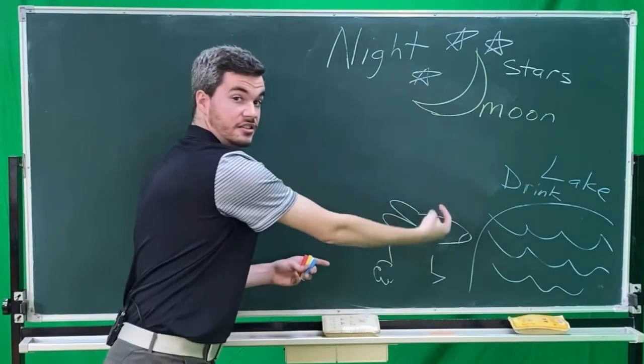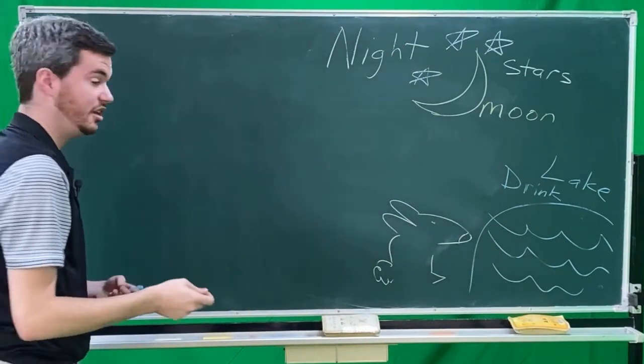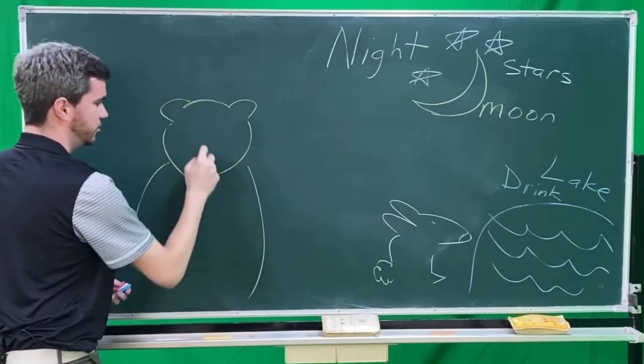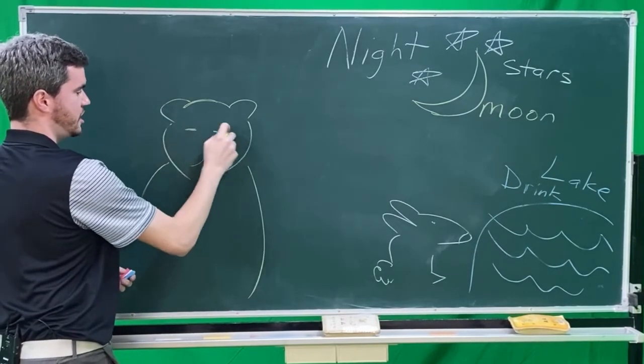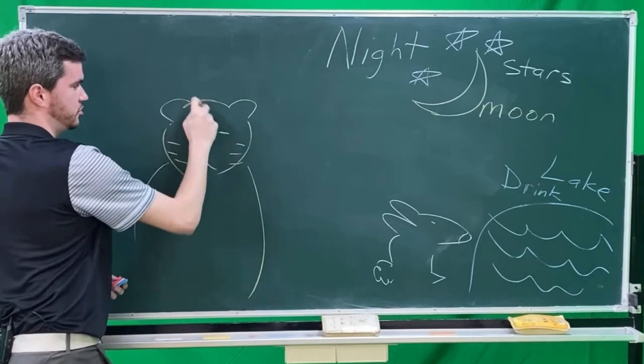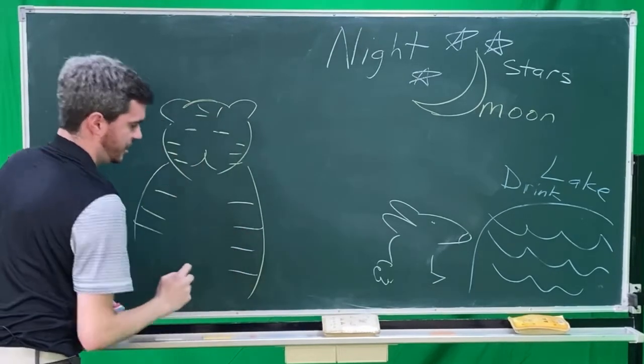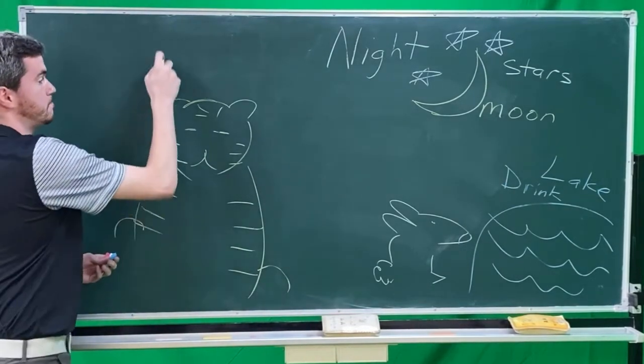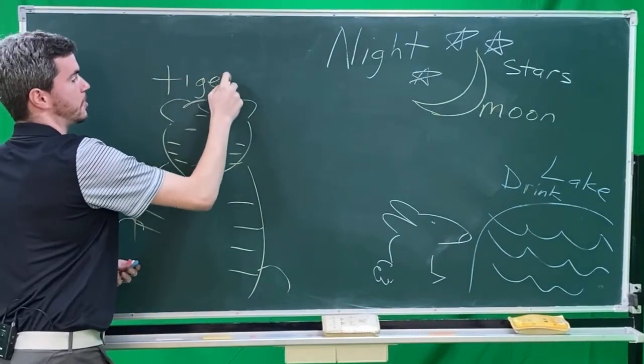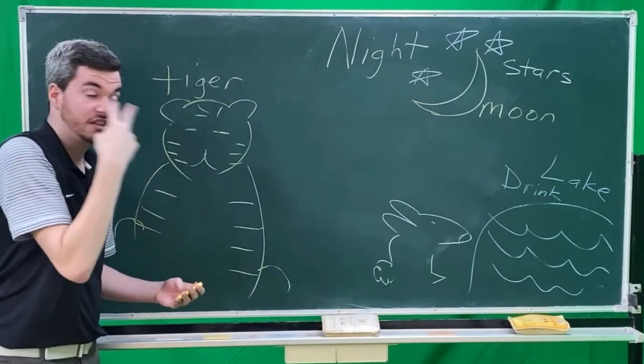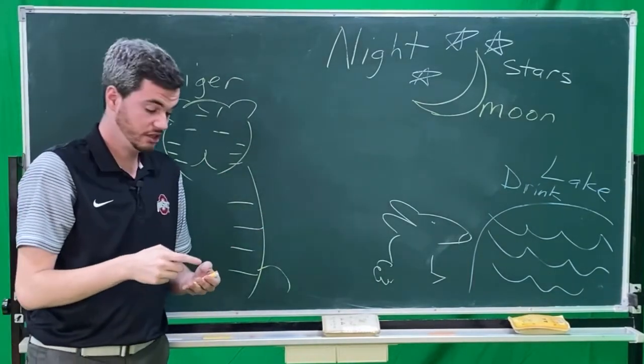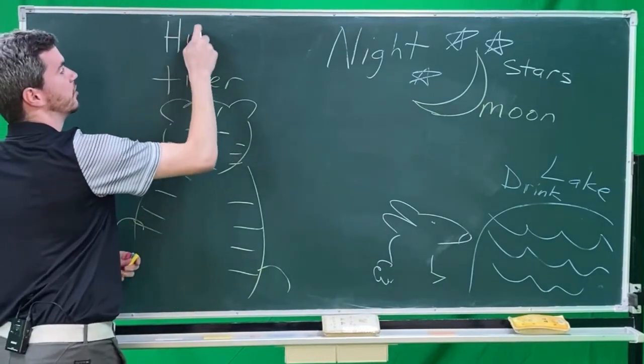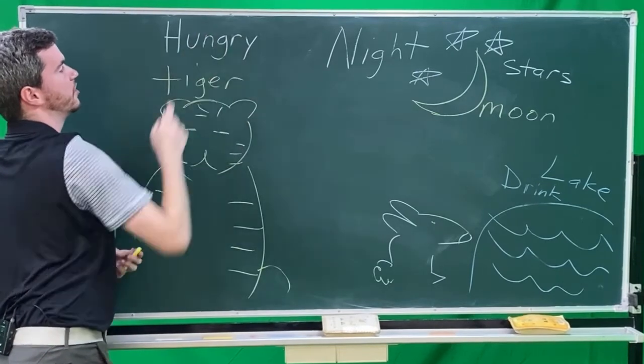And behind the rabbit is a tiger. Oh no! Big tiger. Here is my tiger with eyes. He has some stripes on his whole body. There is his feet. Here is my tiger. Now, the tiger sees the rabbit. And the tiger is hungry. The tiger is very hungry.